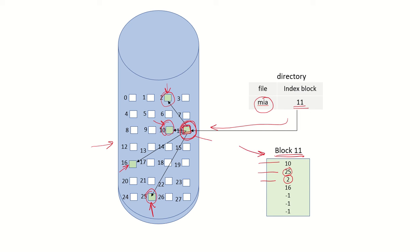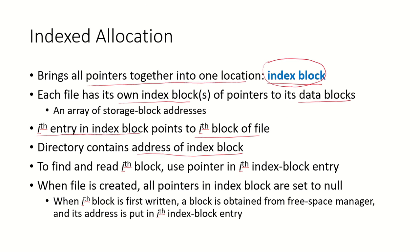If you want to access any particular block of a file, you go to the index block first — which is block 11 — and then index into this block to find out where the ith block of that particular file is. The directory contains just the address of the index block, and whenever we want to find and read the ith block, we use the pointer in the ith index block entry.